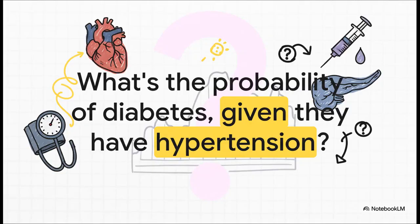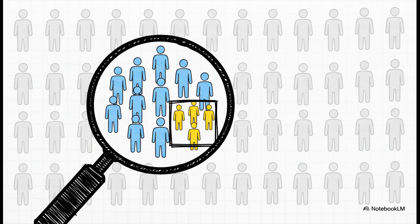This is the question. This is the one that cuts through all the noise. We're not just asking what the chance of diabetes is out of all 100 people. No, we're zooming in. We are looking only at that group of 25 patients who we already know have hypertension. And for that specific group, what are their odds of also having diabetes?